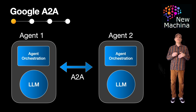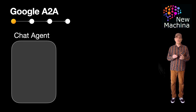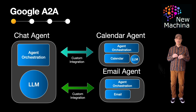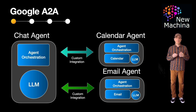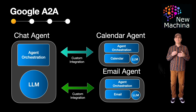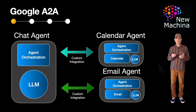So what's the problem that A to A is trying to solve? Well, right now most AI tools work alone. A chatbot might be able to check the weather, but it can't easily talk to your calendar or email unless a software developer explicitly connects everything up manually. This setup doesn't scale well and makes building useful AI systems complicated and fragile.